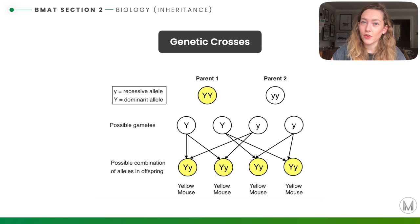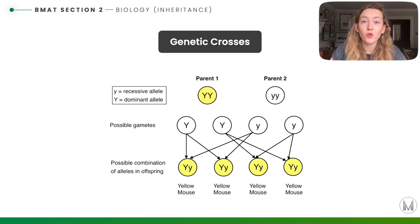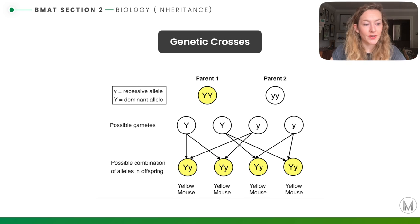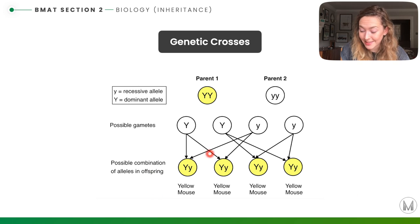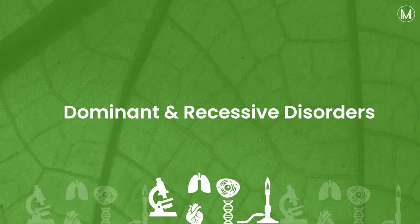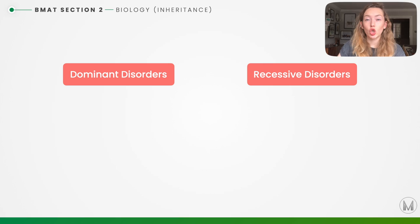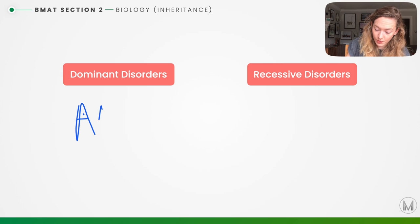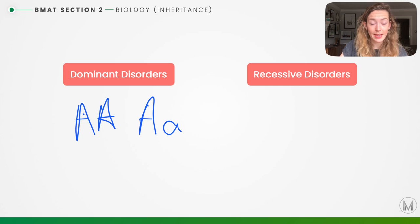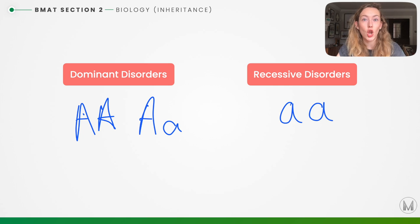Here is an example of a genetic cross. The classic BMAT style question will ask you to identify all the possible genotypes of the offspring and may also ask you to calculate the fraction or probability of each different genotype. For example, they might ask how many of the offspring will be yellow — in this example 100% of the offspring will be yellow. Genetic crosses are often based on diseases caused by either dominant disorders, with a capital A, or recessive disorders, where both alleles are lowercase.